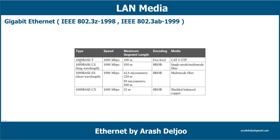Regarding media: 1000Base-T uses Cat5, Cat5E, or Cat6 UTP or STP; 1000Base-SX uses only multi-mode fiber; 1000Base-LX can use both multi-mode and single-mode fiber; 1000Base-CX uses special shielded balanced copper. In Gigabit Ethernet, the frame format and frame size remain the same as standard Ethernet, and it still uses CSMA/CD. Full duplex operation is possible.